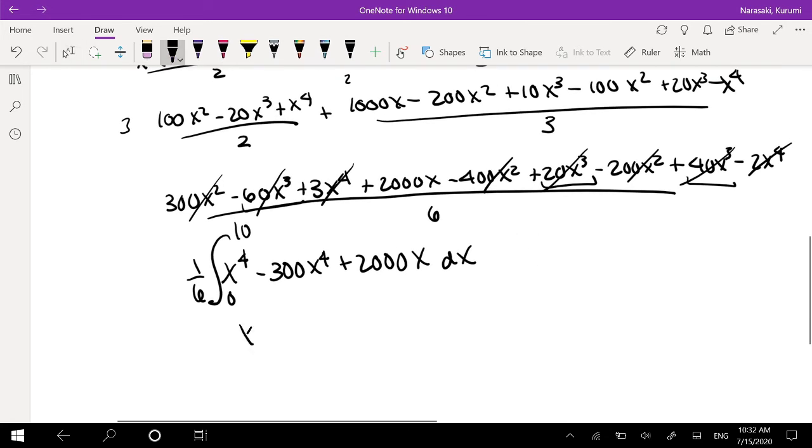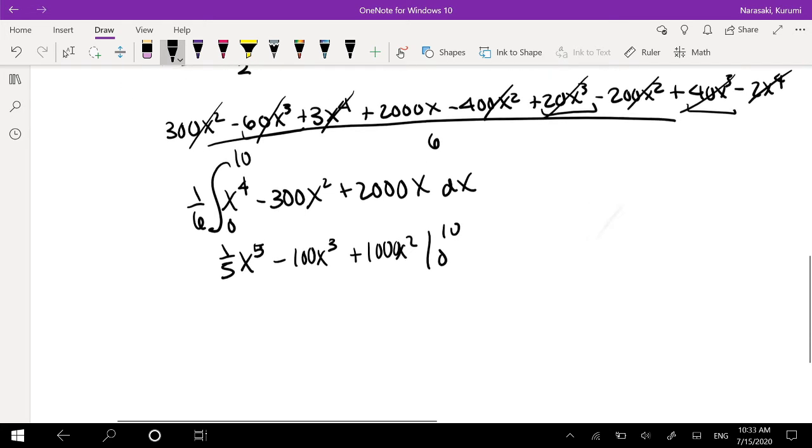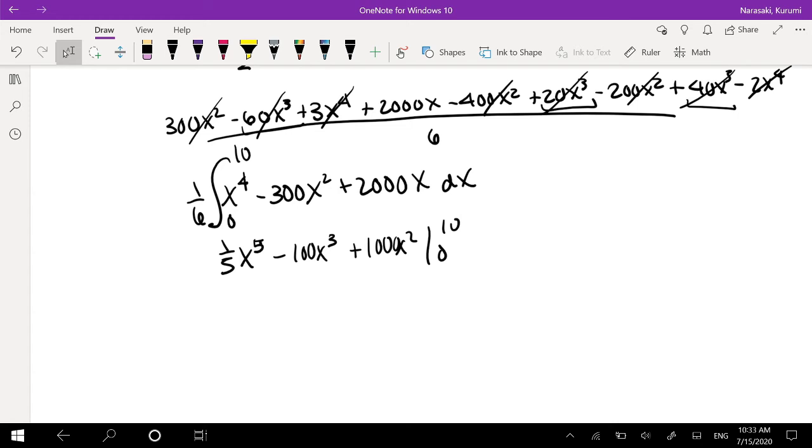Okay. So, this is X to the fourth, X to the fifth, one fifth, minus X, oh wait a minute, this should be X cubed, rough, X cubed, 100, plus X squared, 1000. Integrating from 0 to 10. Okay, so let me plug that into my calculator real quick. So, again, that's one fifth, 10 to the fifth, minus 100, 10 to the third, plus 1000, 10 squared, right? Divide it by 6.